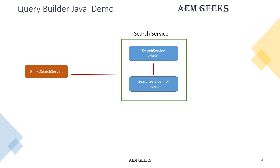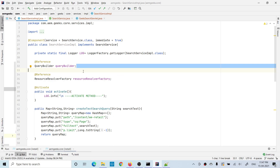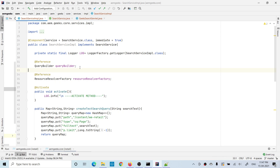As part of the demo, I'll write a service called Search Service and implement the whole demo in it. We'll call this service in a servlet called Geek Search Servlet. I have created the Search Service, and in that service I'm first getting a Query Builder using the reference annotation.